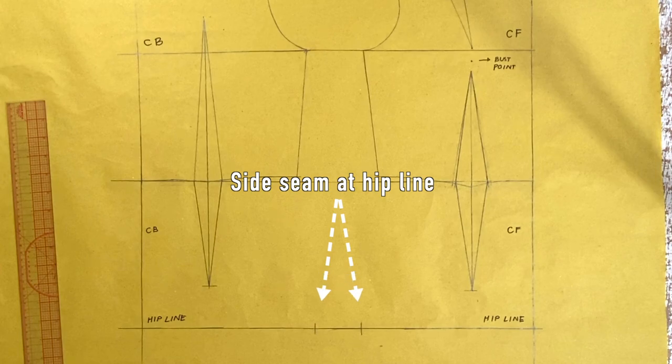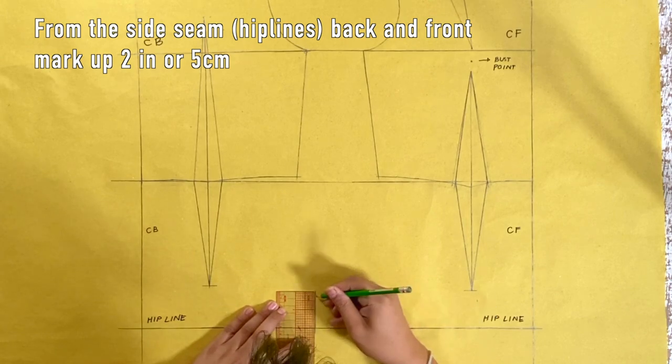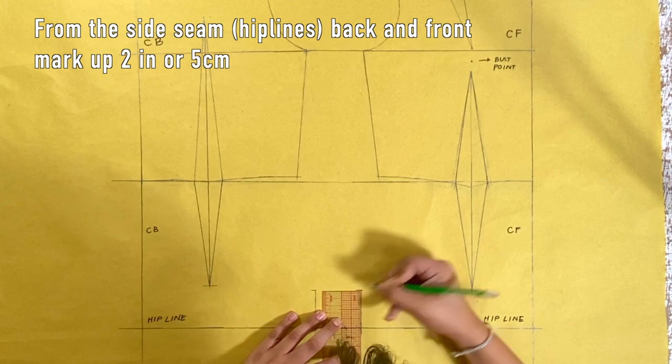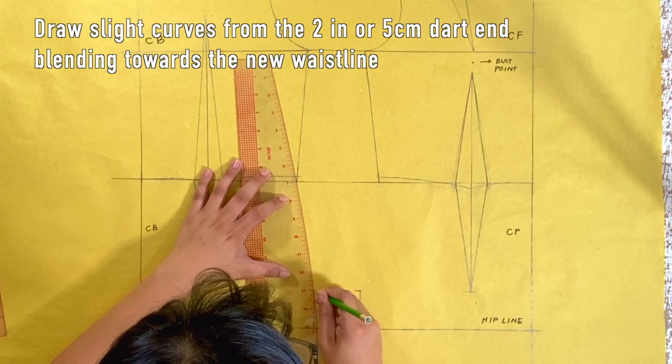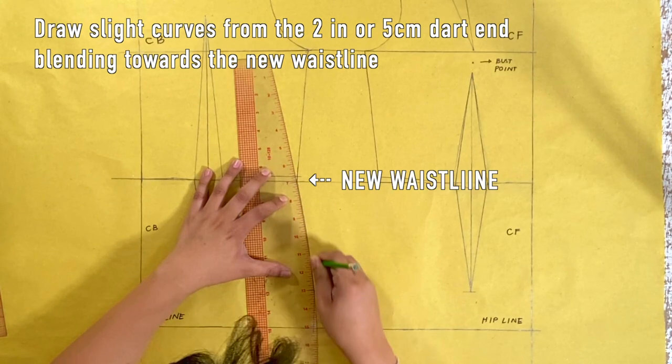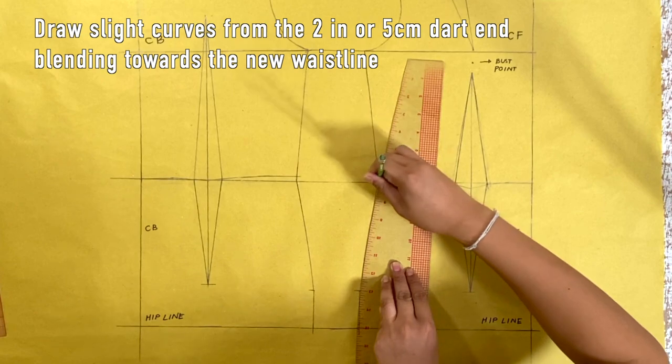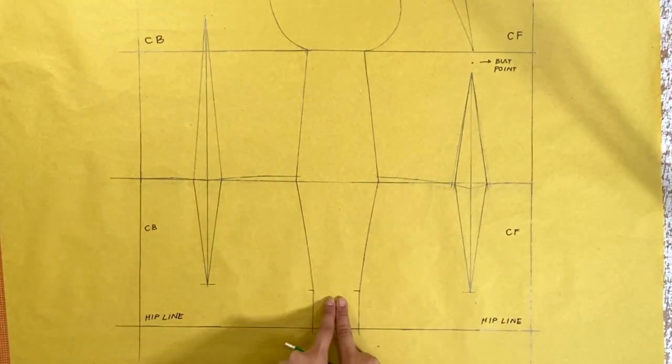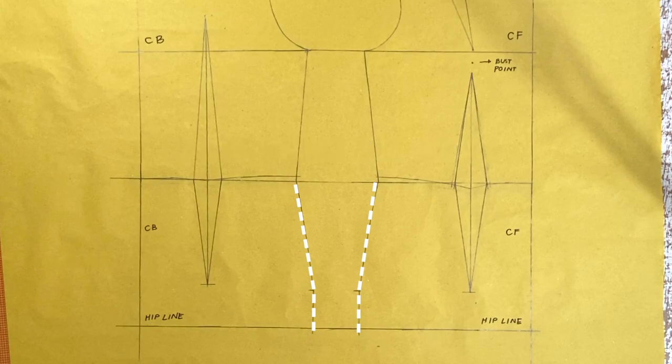Now that we have completed the darts, we can now move on to step 5. For the side seam, people prefer to curve it, but this time we will do the curving and a hip dart at side seam. From the side seam hip lines, back and front, mark up 2 inches or 5 centimeters and draw a vertical line. This will be the dart end for the side seam at hip line. Using your curve ruler, draw a slight curve from the 2 inches mark, blending towards the new waistline. Do this on both front and back side seams. Now, we have a dart for the side hips. And we are done for the drafting part of the basic torso or basic dress slopper.